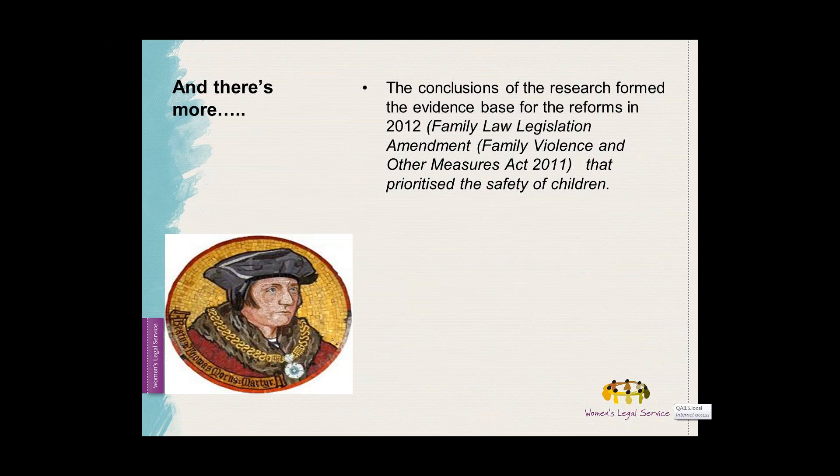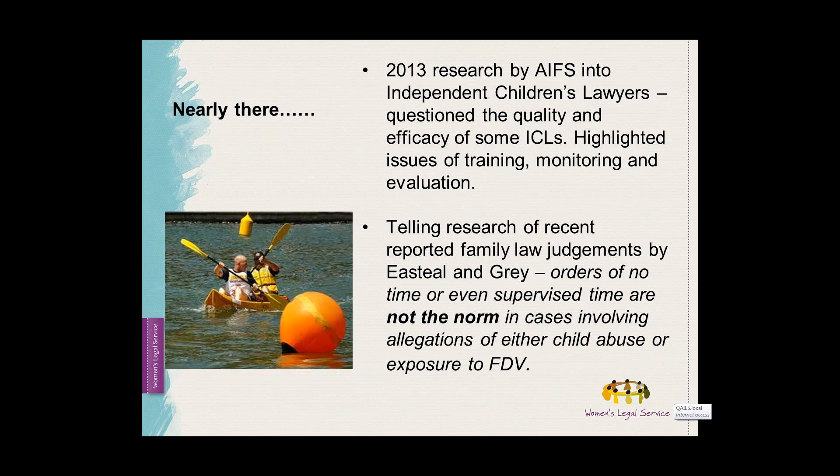The extensive reviews of the 2006 family law amendments were commissioned by the Australian Government as well as independently conducted by interested stakeholders, and the results were conclusive. While the 2006 family law reforms had a positive impact in some areas, the research indicated that the 2006 Act had failed to adequately protect children and other family members from family violence and abuse. There is also research by the Australian Institute of Family Studies into the role of independent children's lawyers, which found that children were clearly in unsafe and inappropriate parenting arrangements, as eventually shown by the outcome of family law proceedings.